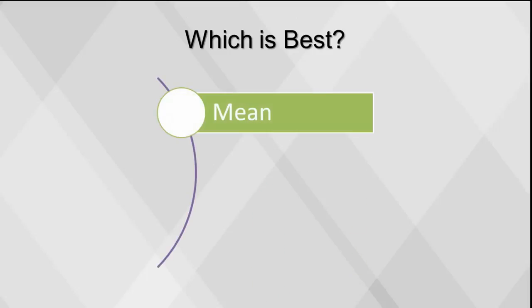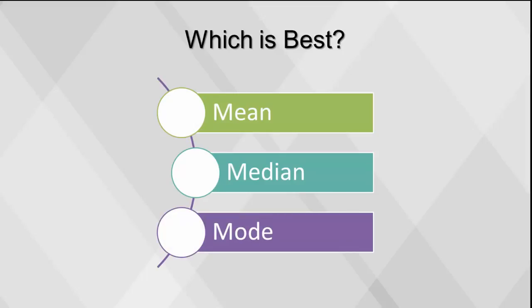There is no single measure of center that is best. If the data are normally distributed, then mean is used. However, if data are not normally distributed, the median is a better measure. Often we use both to understand the underlying structure of the distribution.